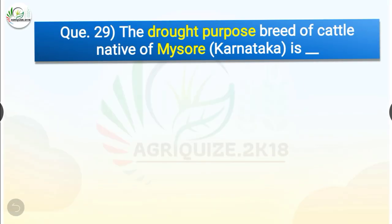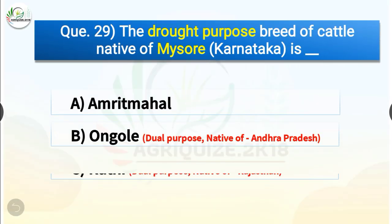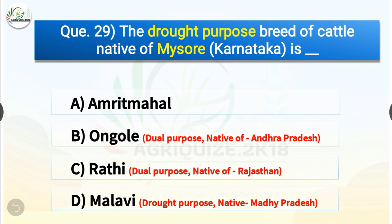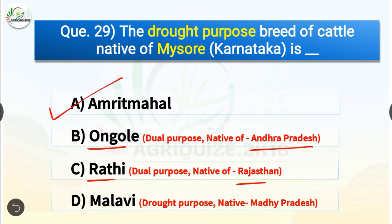Question number 29. The drought purpose breed of cattle native of Mysore, Karnataka is dash. The options are Amritmahal, Ongole, Rathi or Malvi. The correct answer is option A, Amritmahal. So the drought purpose breed native of Mysore is Amritmahal. Ongole is dual purpose native of Andhra Pradesh, Rathi is dual purpose native of Rajasthan, and Malvi is drought purpose native of Madhya Pradesh.